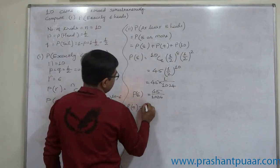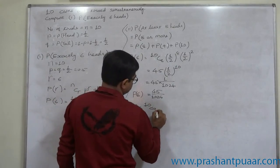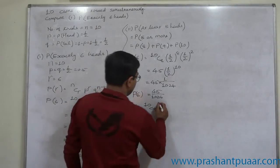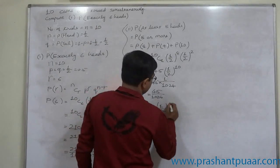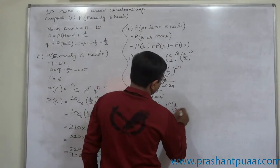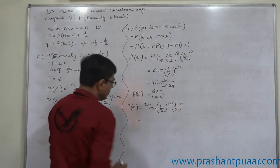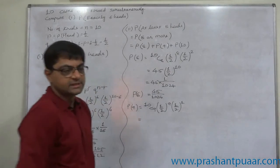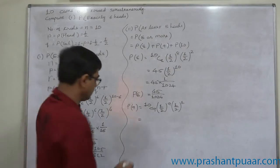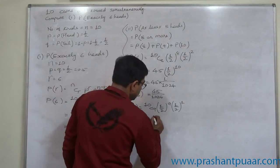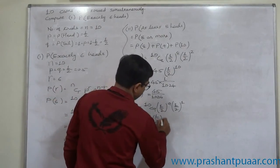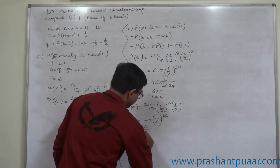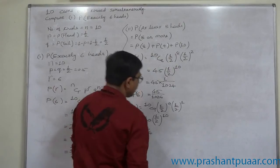P(9) = 10C9 × (1/2)^9 × (1/2)^1. Since 10C9 = 10, this gives 10 × (1/2)^10 = 10/1024.